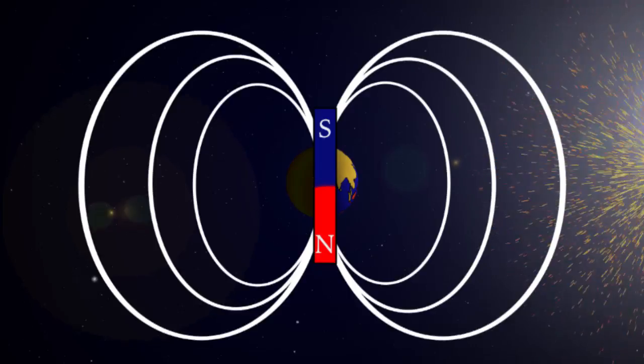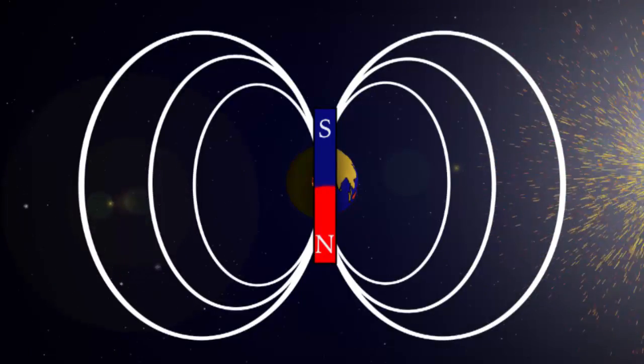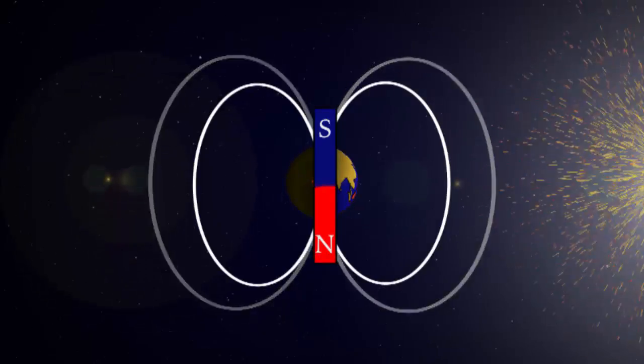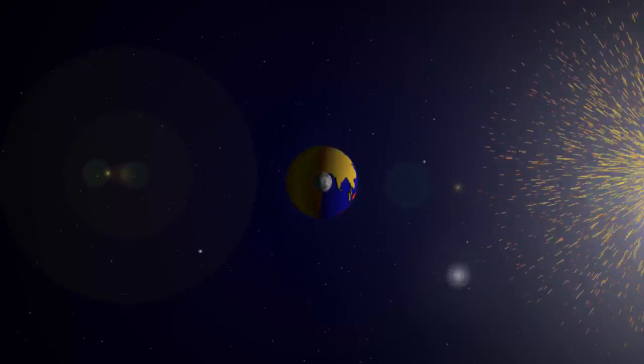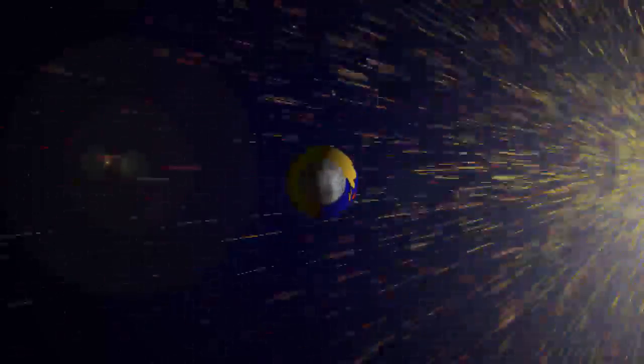Thanks to this, cosmic rays are deflected around the Earth's protective magnetosphere. Otherwise they would make it to the surface and we would have to adapt to more mutations, and our atmosphere would get eroded away in short order, so be grateful for your magnetosphere.